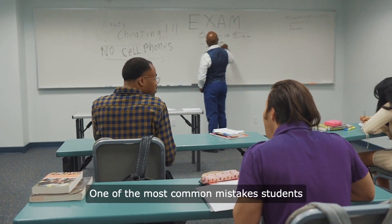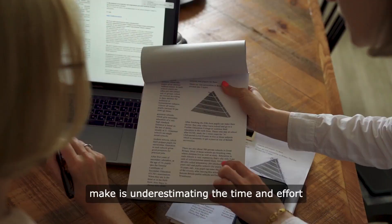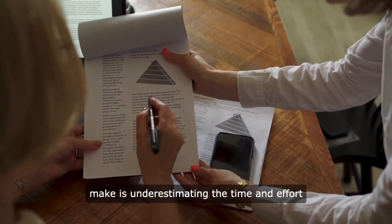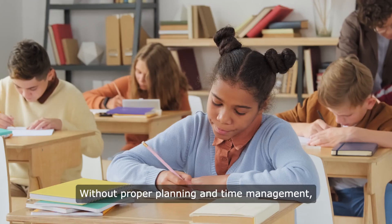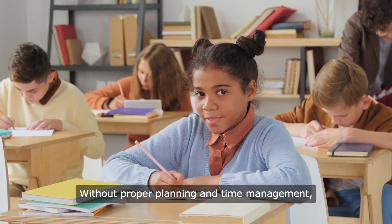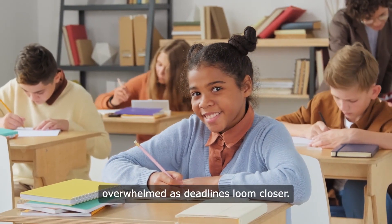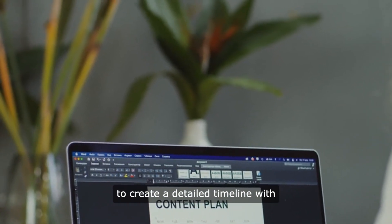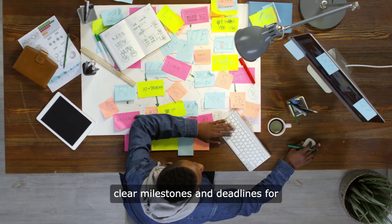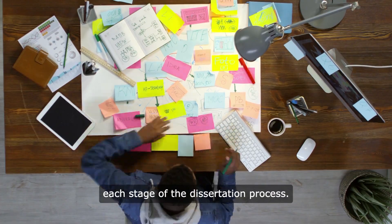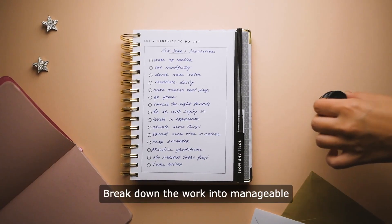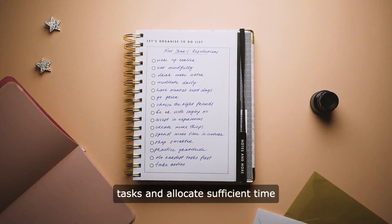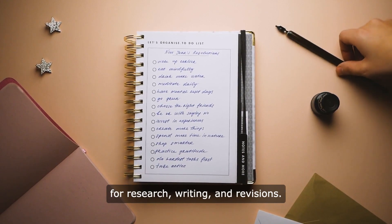Lack of Planning and Time Management. One of the most common mistakes students make is underestimating the time and effort required to complete a dissertation. Without proper planning and time management, students may find themselves overwhelmed as deadlines loom closer. To avoid this, it's essential to create a detailed timeline with clear milestones and deadlines for each stage of the dissertation process. Break down the work into manageable tasks and allocate sufficient time for research, writing, and revisions.